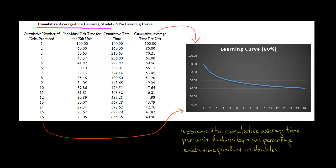If we double production again — going from two units to four units — then the average time to make a unit is going to be 80% again, because we're assuming an 80% learning curve. It's going to be 80% of 80, because we're going from two to four. So 80 times 80% gives us 64, because 64 is 80% of 80.